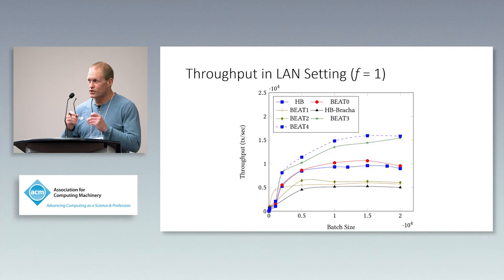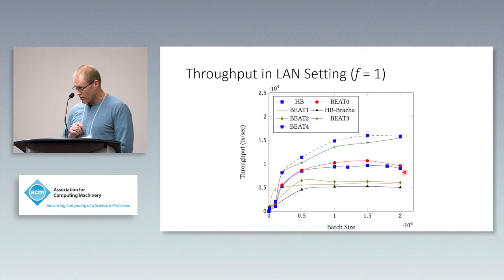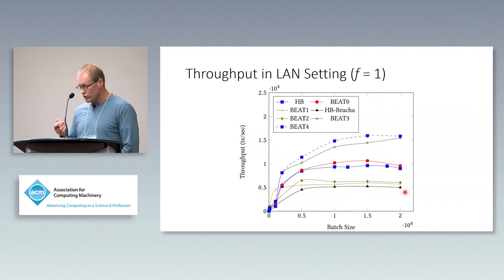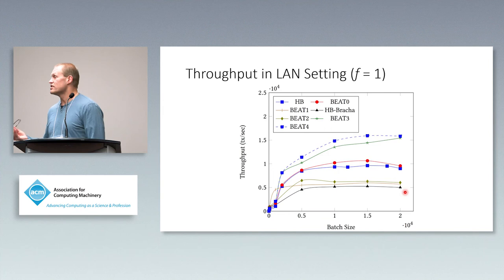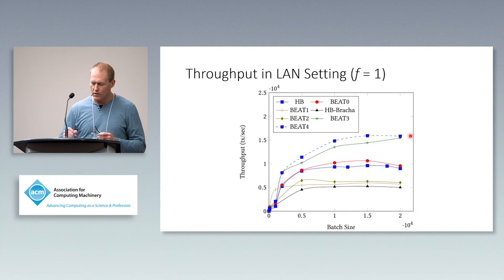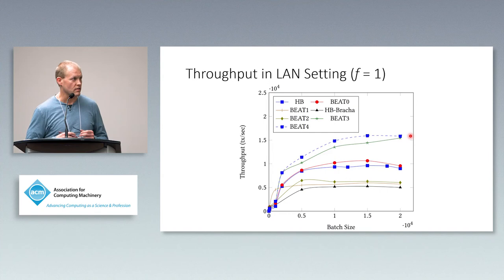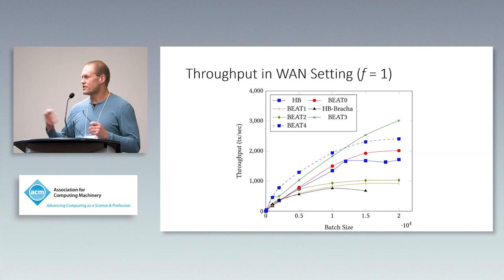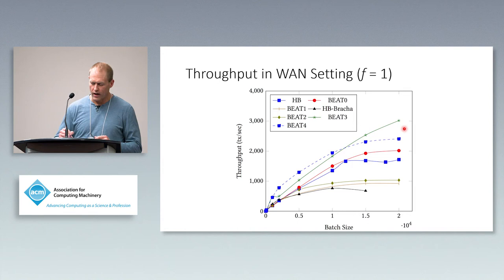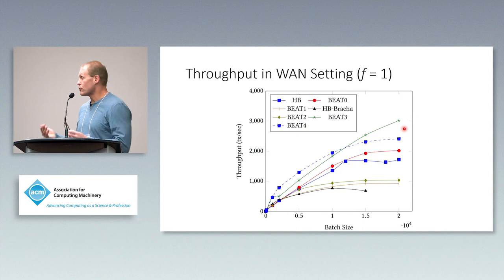Looking at throughput, the original HoneyBadger is shown with blue squares, and HoneyBadger with Bracha broadcast as black triangles — replacing AVID with Bracha loses some throughput as expected. The erasure coded cross checksum technique is a key element of BEAT-4, and you see much better throughput using this technique versus the original HoneyBadger. In the WAN setting the absolute numbers are lower, but the highest curves belong to BEAT family members leveraging the fingerprinted cross checksum and erasure coding.